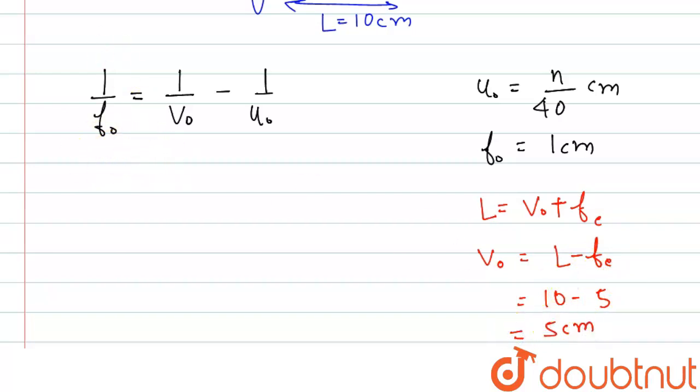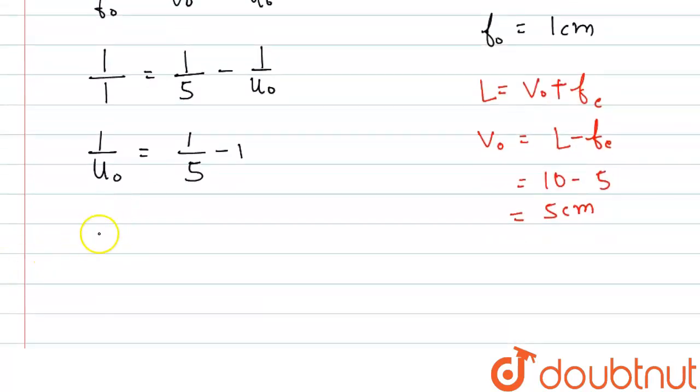Now if we substitute the values here, FO is 1 cm equal to 1 by VO that is 5 cm minus 1 by UO. So if we write 1 by UO this will be 1 by 5 minus 1. And we can write UO equal to 5 by 4 cm.